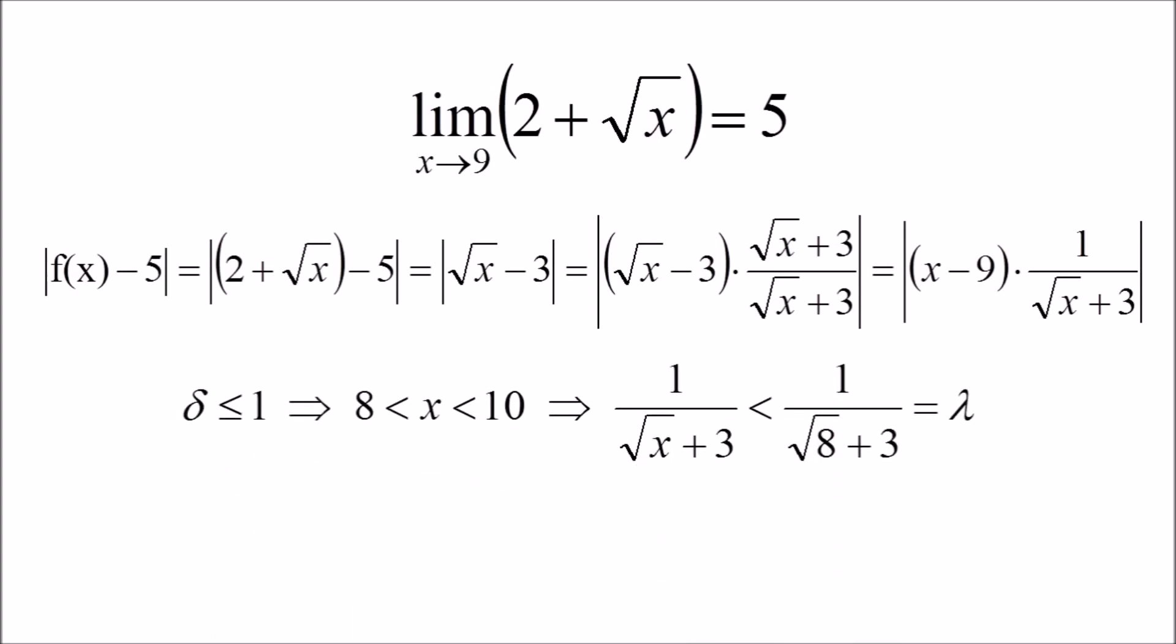The second step is to bound the additional factor that has been introduced. To do this, assume that delta is less than or equal to 1. If this worries you, remember that we only need to find one delta for each epsilon. Thus, we don't necessarily have to do this for every delta, only for every epsilon.